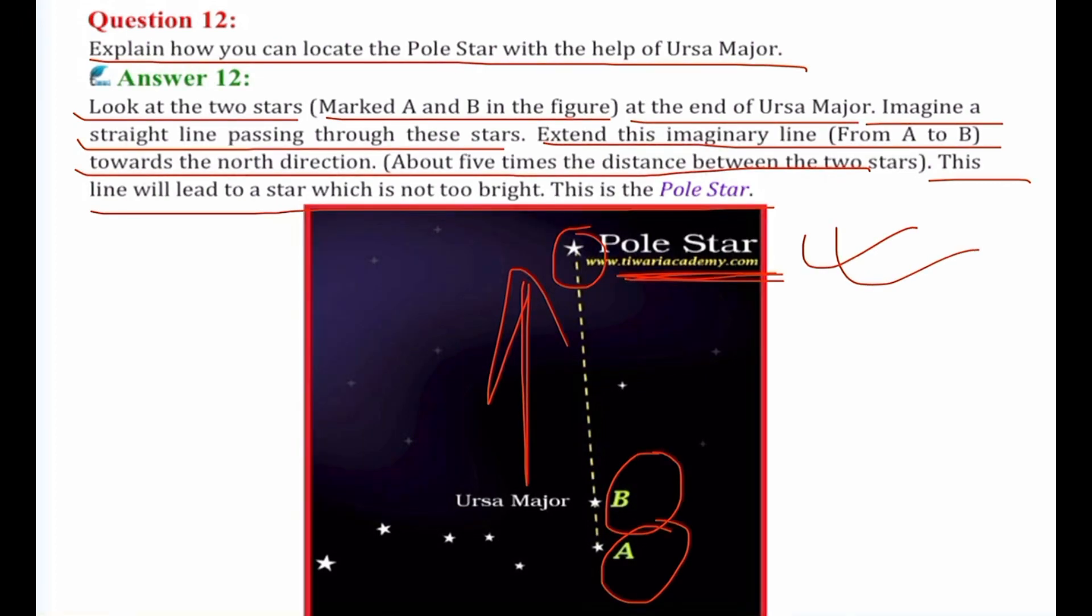So it's actually very simple. You have to notice the two stars at the end of Ursa Major. Then you have to draw an imaginary straight line in your mind. This imaginary straight line at the end of Ursa Major, you extend it towards the north direction. And this will lead to the pole star. And the pole star's characteristics - pole star is not very bright.